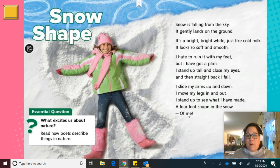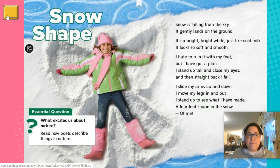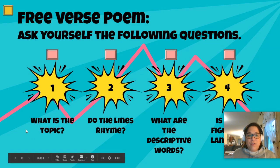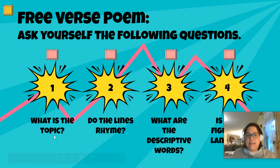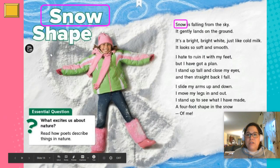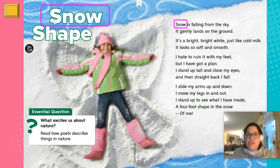So it's a totally different type of poem than what we're used to. But it has a clear focus, a clear topic, and it really helps us picture the thoughts and feelings the poet has about the topic. So let's go back. The first question we needed to ask ourselves is: what is the topic? Let's look at text evidence. The title is Snow Shape, and the whole poem talks about snow. The author wrote this poem about snow — that's the topic.